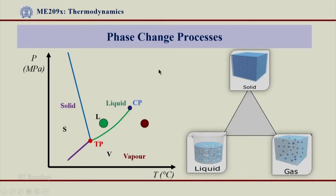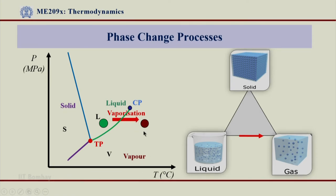Let us now look at the liquid to vapor phase transition. All of you know these processes very well; we are just naming the standard processes. This phase change from liquid to vapor happens when the temperature of the liquid increases, and this is what we call vaporization, as shown on the triangle. If we have a vapor and decrease its temperature, we get conversion of vapor into liquid — the reverse of vaporization — and that is what we call condensation. So vaporization and condensation are two reverse processes between the liquid to gas or liquid to vapor phase change.